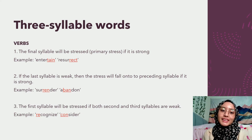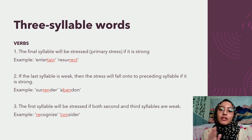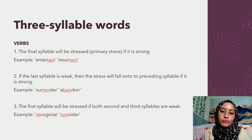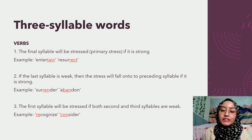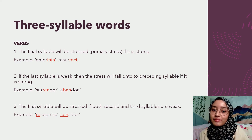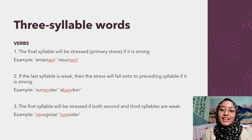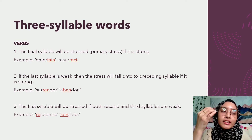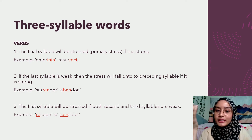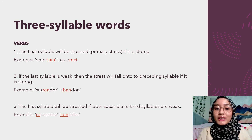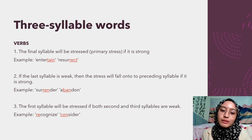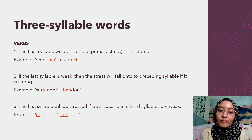Moving on to three-syllable words — same thing here, we will start off with verbs. First off, the final or third syllable will be uttered with primary stress if it is strong. For example, the word 'entertain', 'resurrect'. However, what if the last syllable is not strong? Then the stress will fall onto the preceding syllable only if it is strong, like 'surrender', 'abandon'.